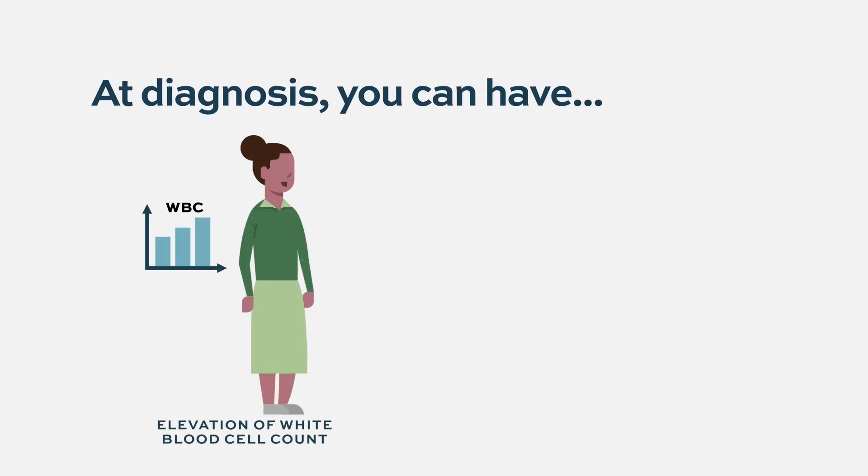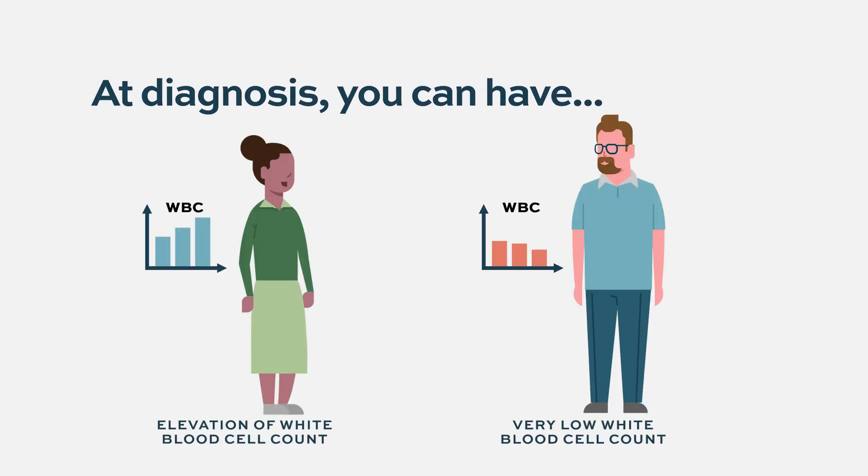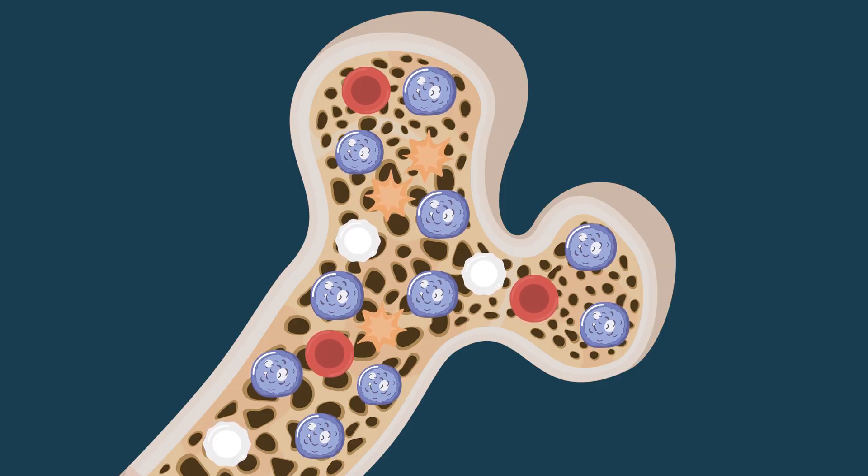At diagnosis in AML you can have either an elevation or a very low white blood cell count. It all depends on the genetic drivers of the acute leukemia and whether the disease is crowding out the bone marrow. In acute myeloid leukemia, the reason cell lines are low — especially red blood cell counts and platelets — is because the disease is crowding out the bone marrow. Some patients can have an elevated white blood cell count, or even a low one, and typically it's the immature cells seen in the blood that are representative of the leukemia cells.